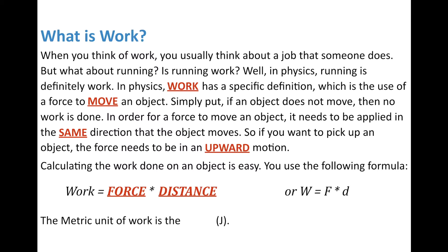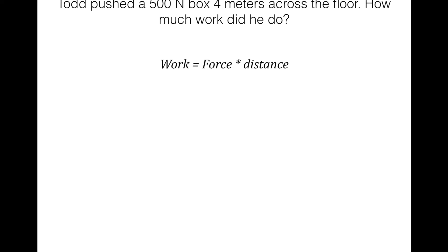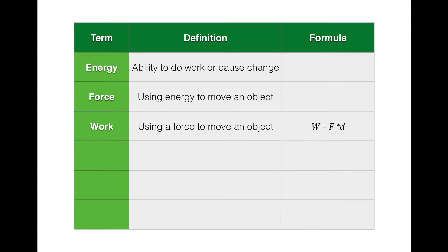We can express work mathematically using a formula. Work equals force times distance, or W = F × d. The metric unit of work is the joule (J). Let's do a practice problem: Todd pushed a 500-newton box four meters across the floor — how much work did he do? Write the formula: W = F × d. Substitute: W = 500 N × 4 m. Multiply: 500 × 4 = 2,000 joules. The work done by Todd was 2,000 joules.